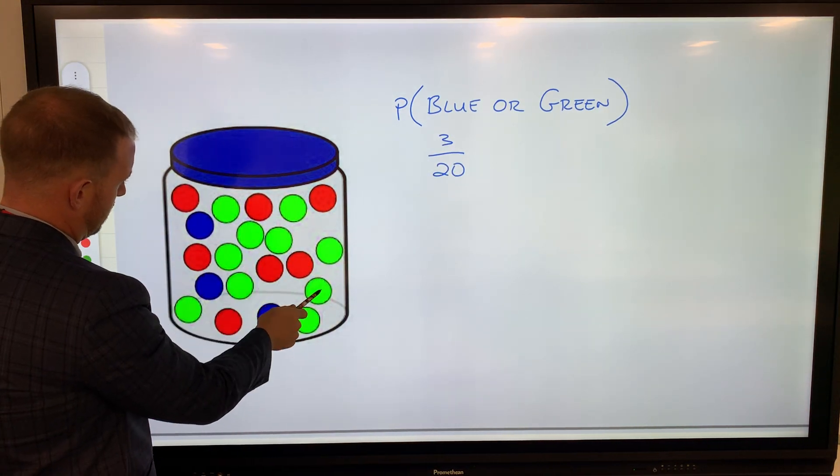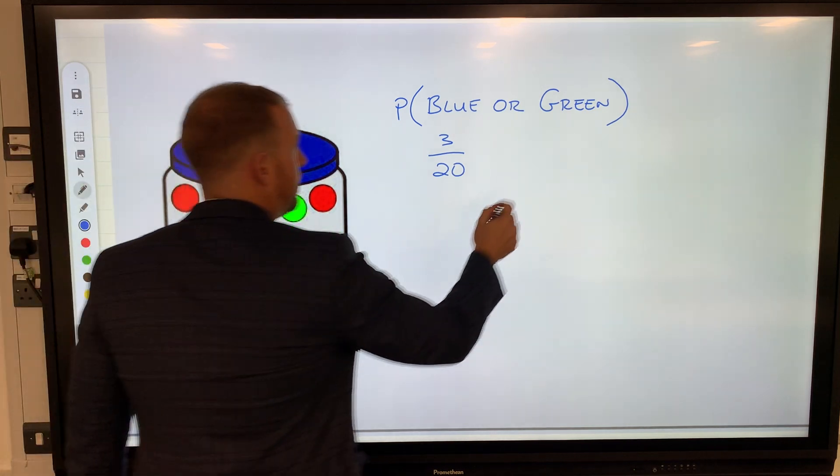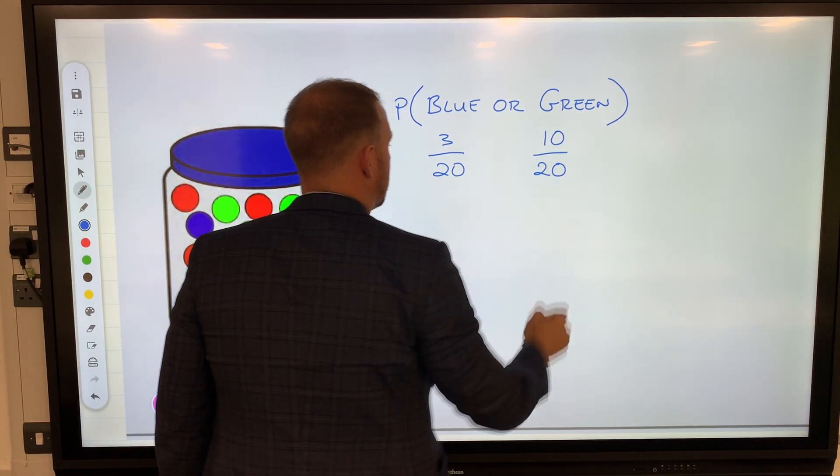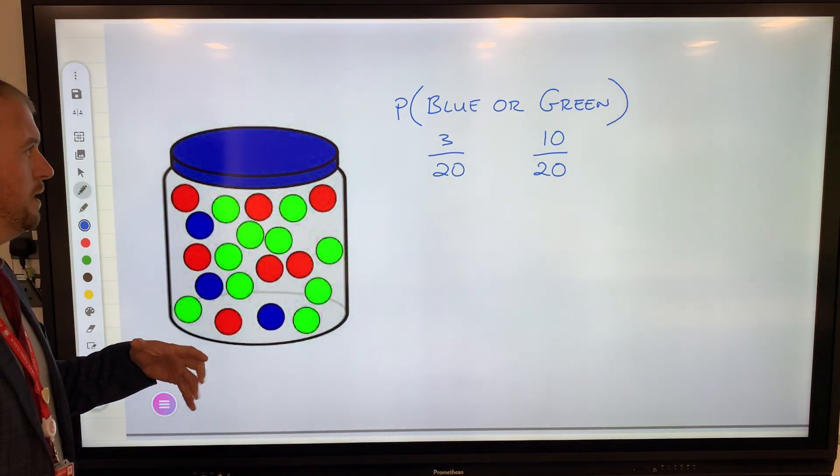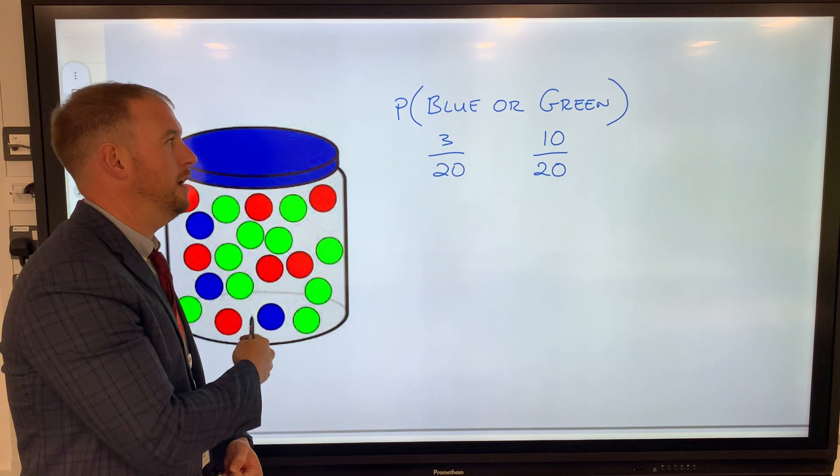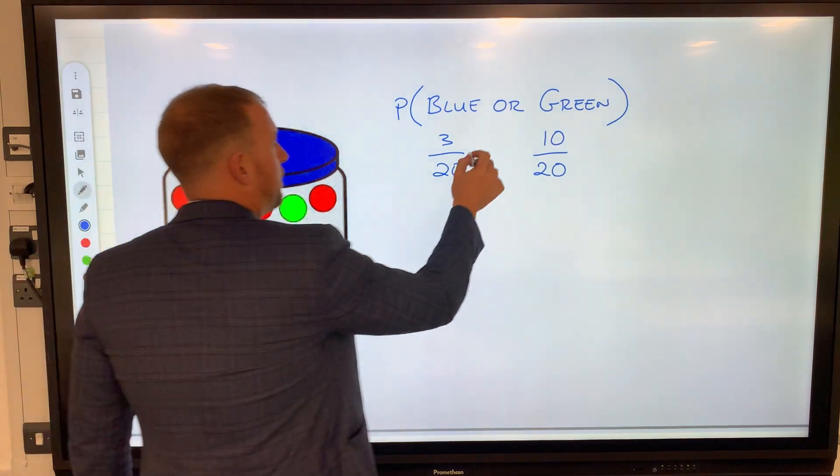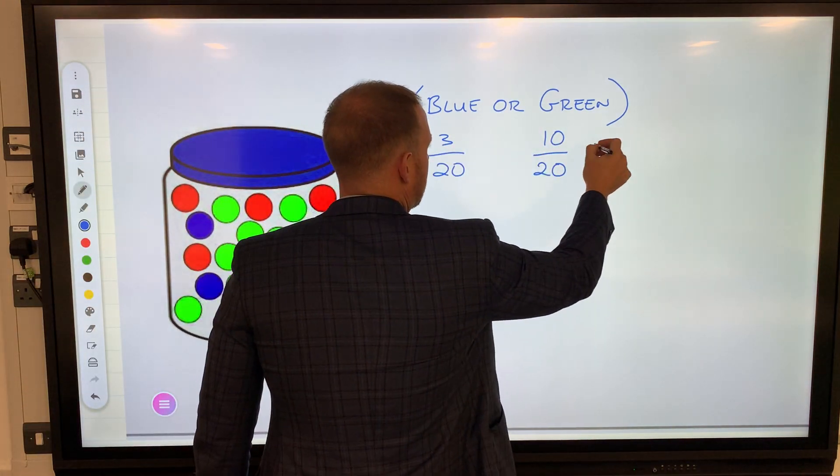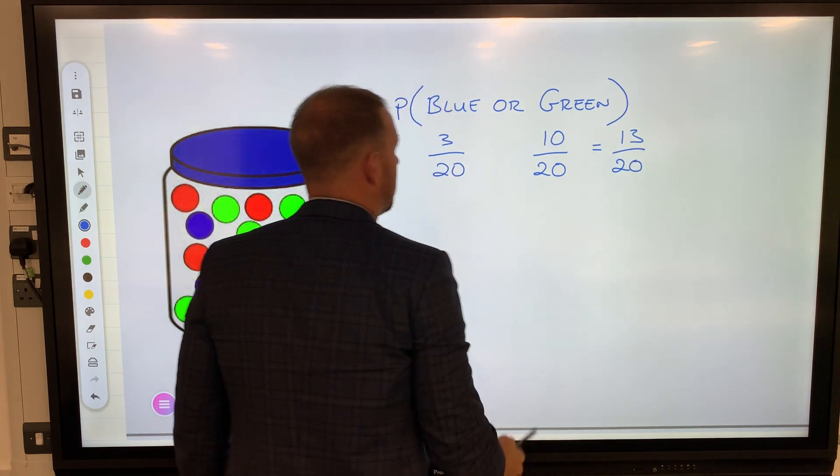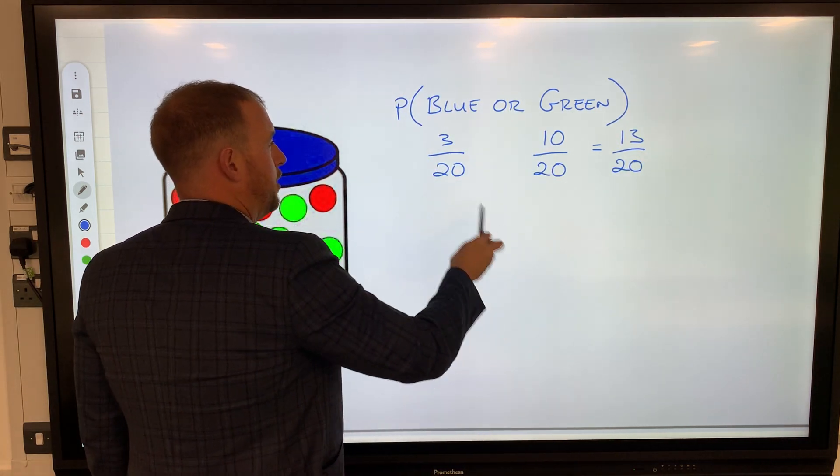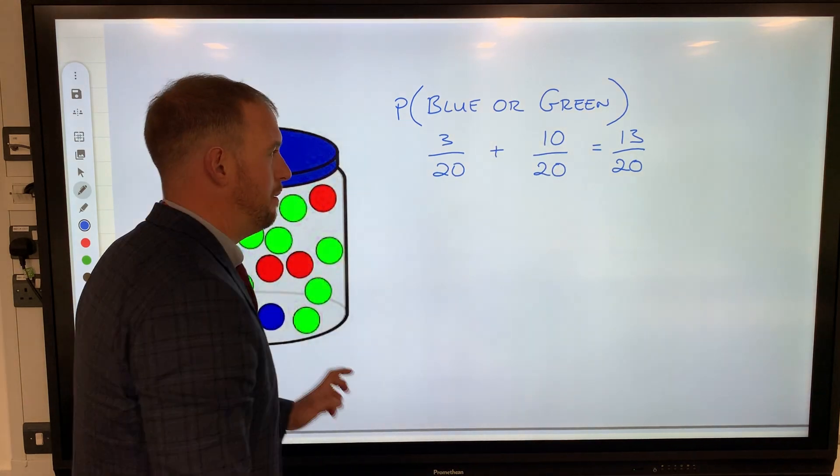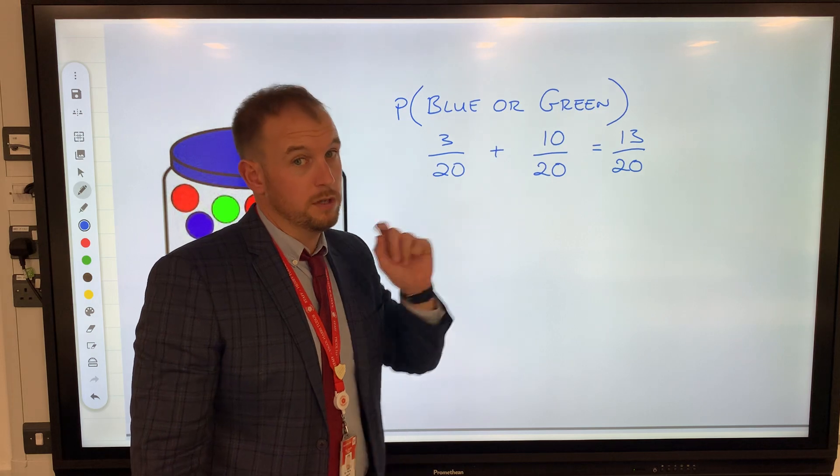If you'd imagine you're blindfolded, there are three blue in there. It could either be blue or green. If I've got three blue and 10 green, that means I have 13 of them which are either blue or green. To get 13, we have to add these together. Remember when you're adding fractions, the bottom number, the denominator, always stays the same.